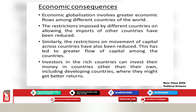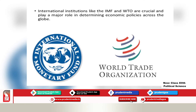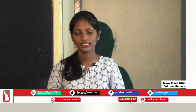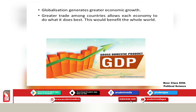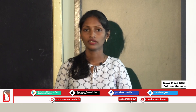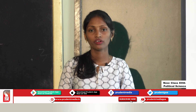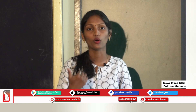Investors in the rich countries can invest their money in countries other than their own, including developing countries where they get better returns. International institutions like the IMF — that is, International Monetary Fund — and WTO — that is, World Trade Organization — both play a crucial and major role in determining economic policies across the globe. Globalization generates greater economic growth, that is, increasing GDP of many countries. Greater trade among countries allows each economy to do what it does best, which benefits the whole world. For example, whatever India produces in surplus, we can export it, and whatever we have in deficit, we can import it from other countries.